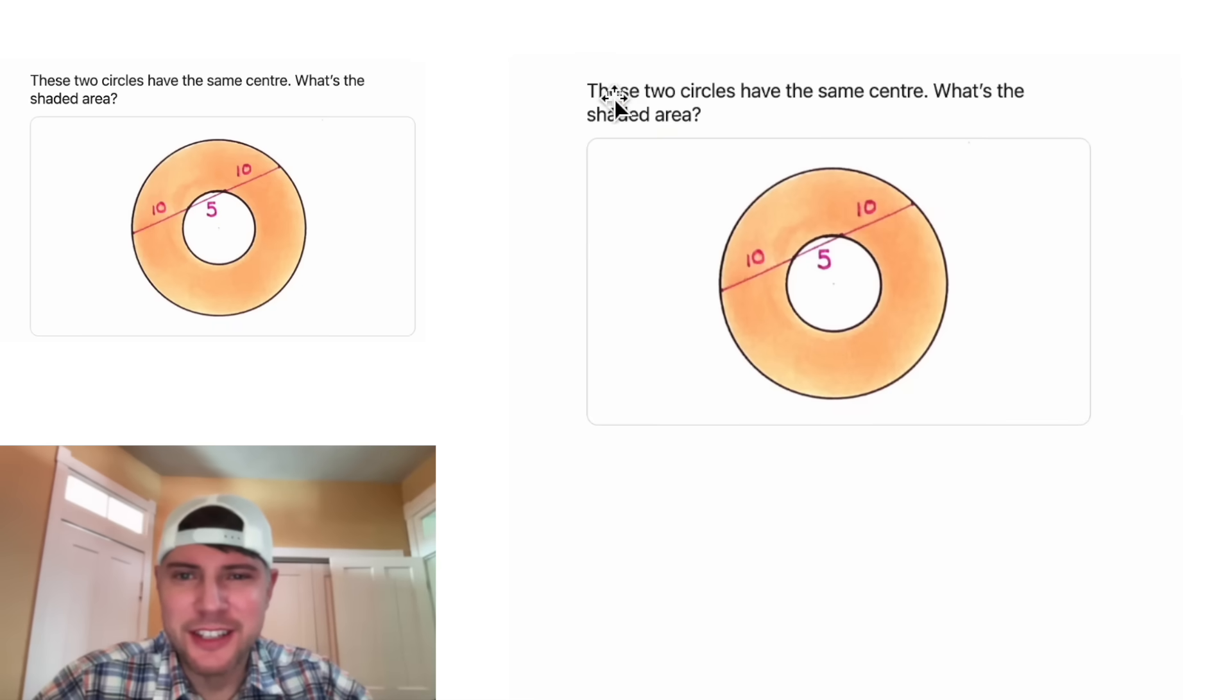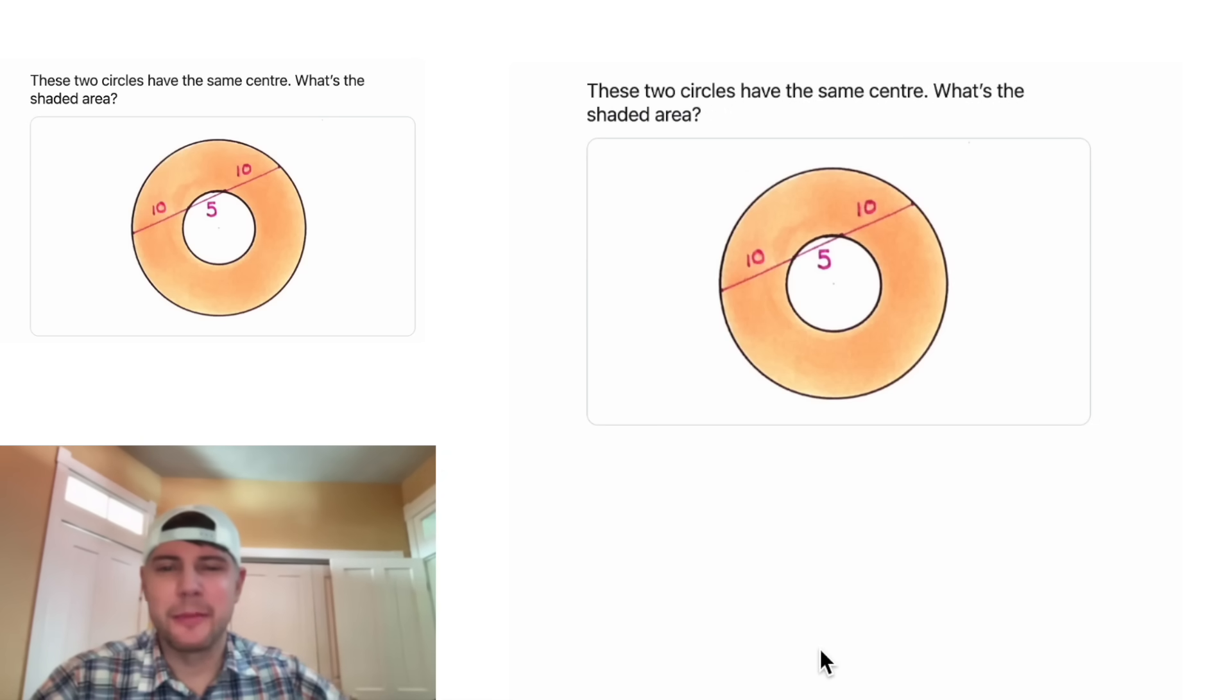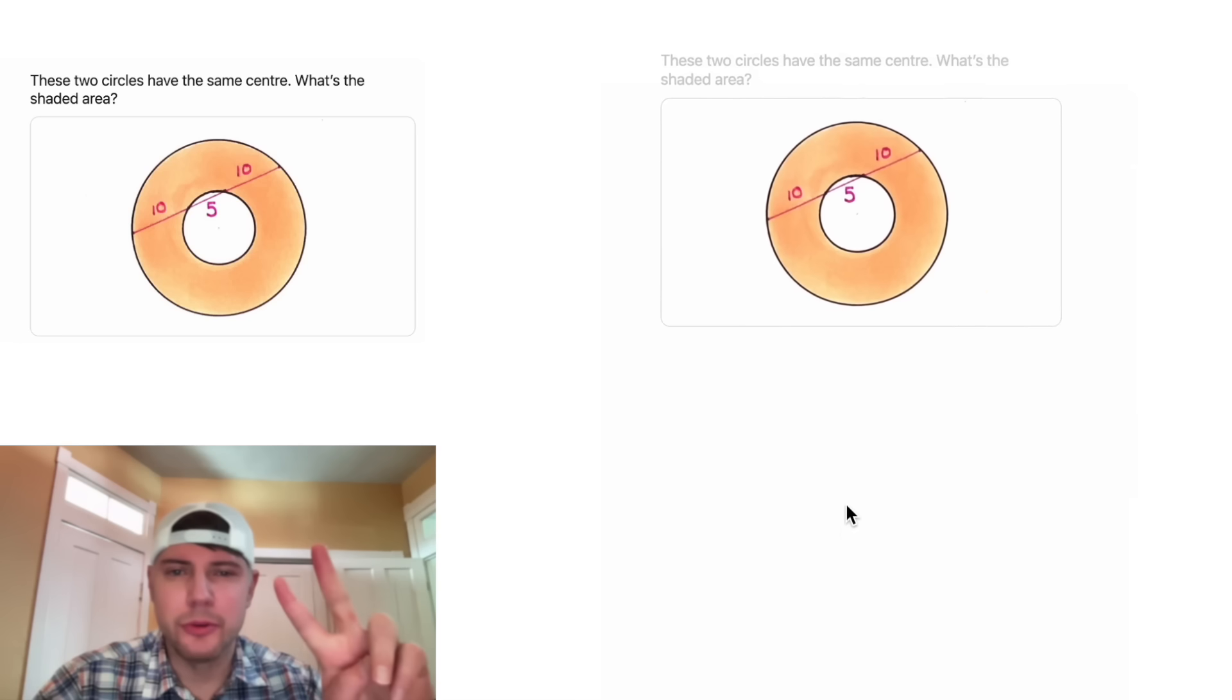This video is sponsored by Brilliant. Hey guys, this looks like a fun one. It says these two circles have the same center and it wants to know what is the shaded area. We're given a chord through the larger circle that's split by 10, 5, and 10. This is another puzzle by Katrina AG. If you want to try it on your own, pause it right now because I'm going to solve it in 3, 2, 1.